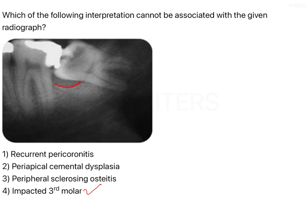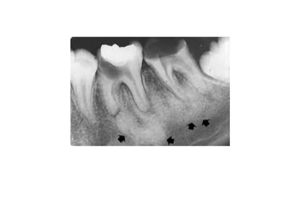The soft tissue that grows on top of the tooth is called a pericoronal flap, and the entire situation is called pericoronitis. In recurrent pericoronitis, food impaction occurs between the second and third molar. Microorganisms get lodged, ferment, and cause pericoronitis leading to periodontitis and bone loss — which is what you're seeing as radiolucency in the radiograph.